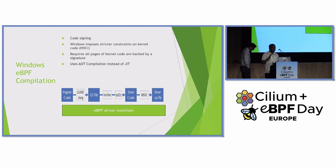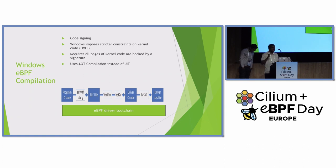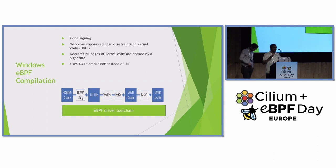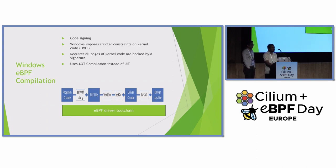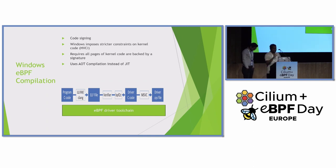Now let's cover how Windows eBPF compilation works. Windows kernel drivers need to be signed. For HVCI — hypervisor code integrity — Windows is more secure and requires all kernel drivers to be signed, which is not a requirement in Linux. In Linux, the JIT compiler directly compiles bytecode to native code in the kernel without signing. In Windows, it cannot use the existing JIT compilation in the kernel. Instead, it uses ahead-of-time compilation, where everything happens in user space.